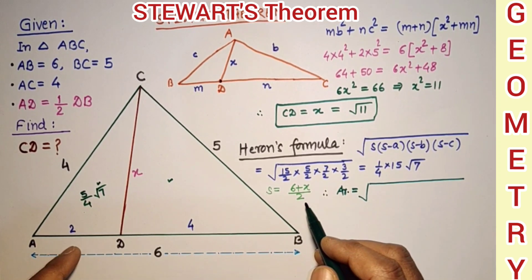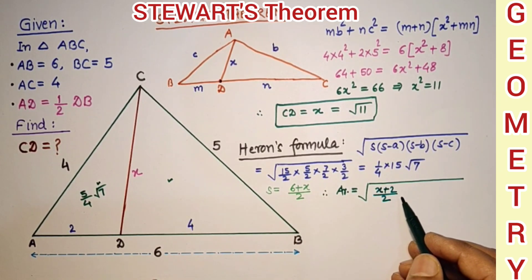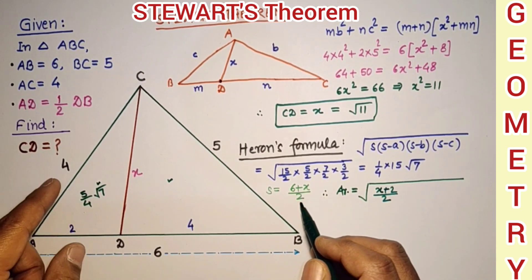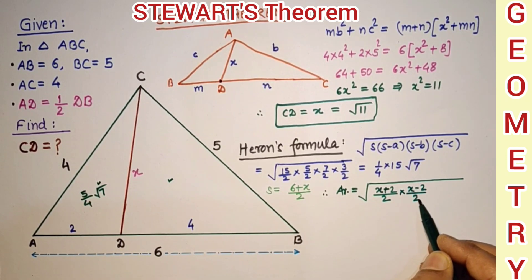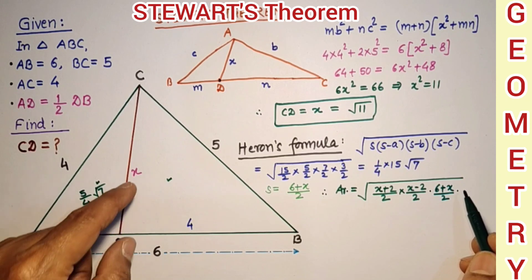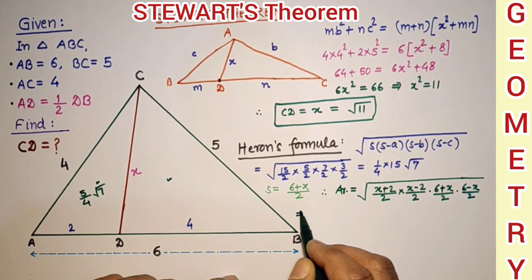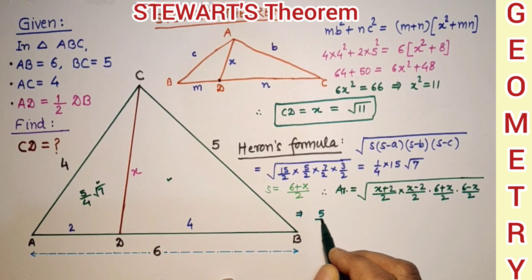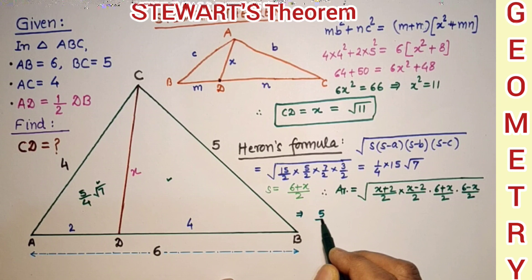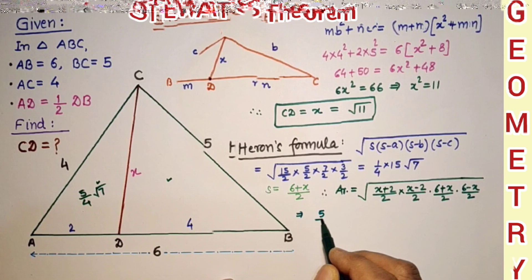The area of triangle ACD equals √((6+x)/2 × (x+2)/2 × (6+x)/2 − 4 × (6−x)/2), which simplifies to √((x²−4)(36−x²)/16), and this area equals (5/4)√7.